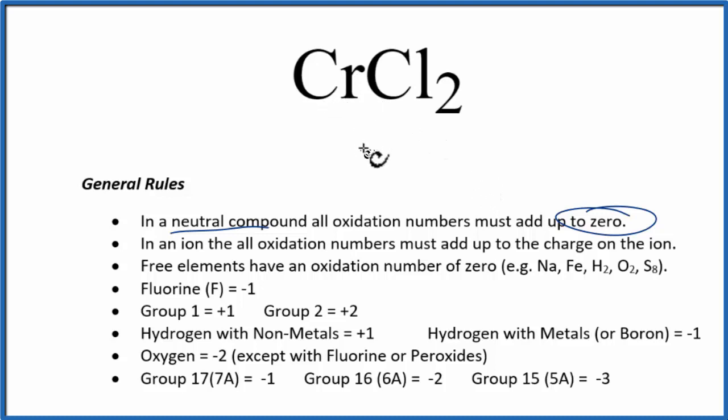Chromium, we don't know the oxidation number for that. It can have different oxidation states. But chlorine, that's in group 17, sometimes called 7A. It has an oxidation number of minus 1. Put a minus 1 up here.